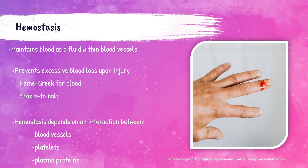Hemostasis is the inherent function of the body that helps the body stop bleeding after injury, to prevent extensive loss of blood, and also to maintain the blood as a fluid within the blood vessels. The word 'heme' is Greek for blood and 'stasis' means to halt, so hemostasis literally means to halt blood. We don't want our blood to clot within our blood vessels, but we do want it to clot and prevent bleeding when we are injured.